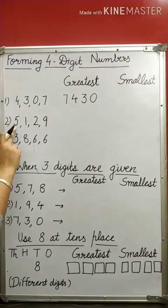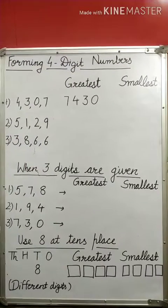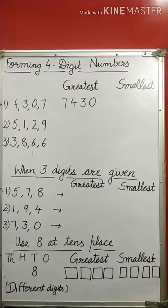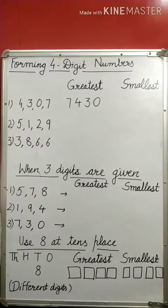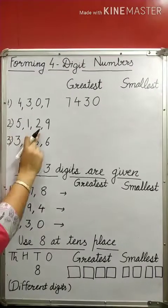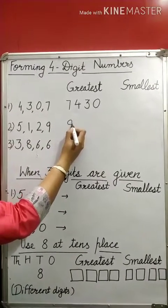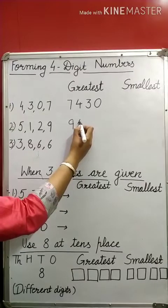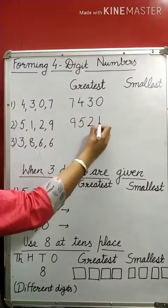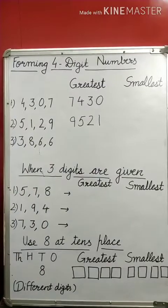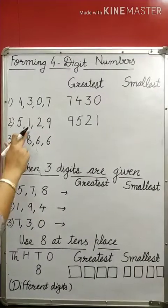Let's take another example: 5, 1, 2, 9. Again, I need to arrange in descending order to form the greatest 4-digit number. Which digit is the greatest here? 9. So: 9, then 5, then 2, and then 1. This is again the greatest number we have formed using these digits.